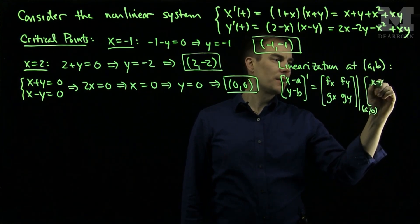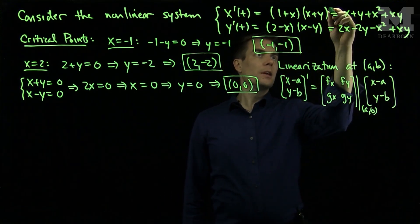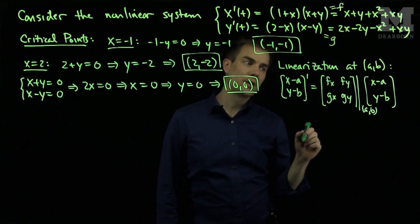x minus A, y minus B, where the F function is the function that is x prime and the G function is the function that is y prime.